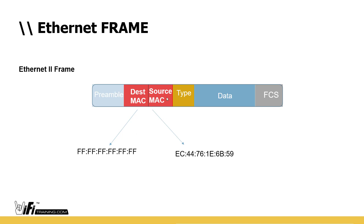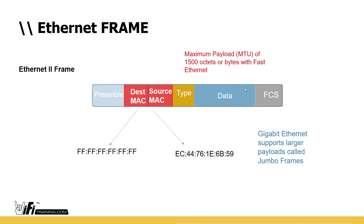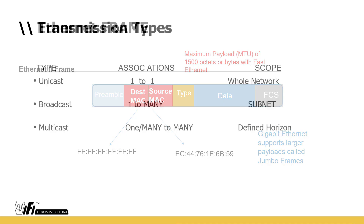In our example, my source MAC was my own address, but my destination MAC was all F's. All F's signifies a broadcast frame, so that frame goes to everybody on the LAN. The maximum payload or MTU is 1500 octets (bytes) for Fast Ethernet. Gigabit Ethernet supports larger payloads called jumbo frames.